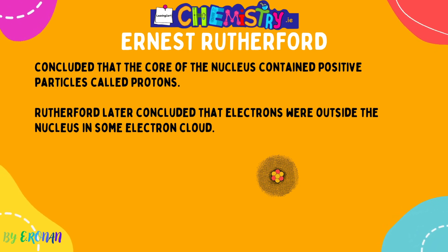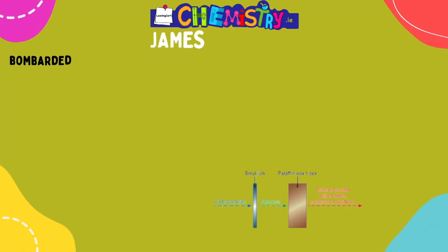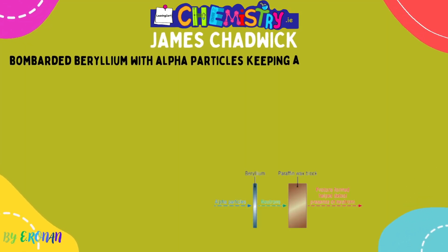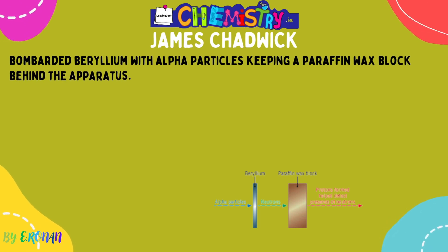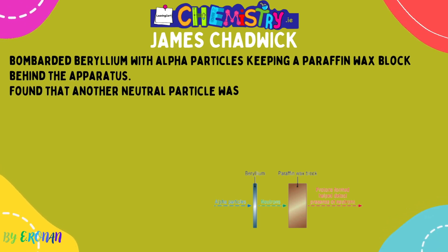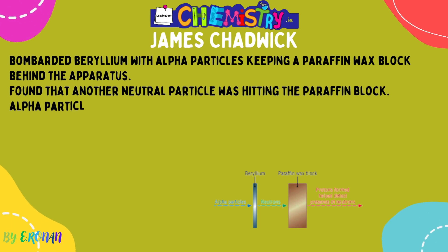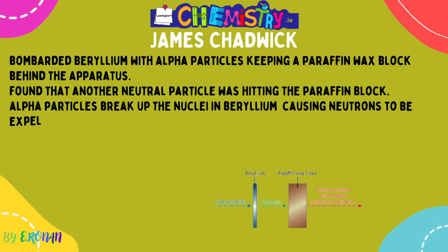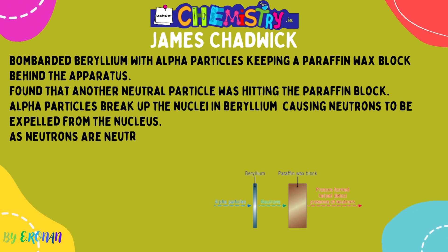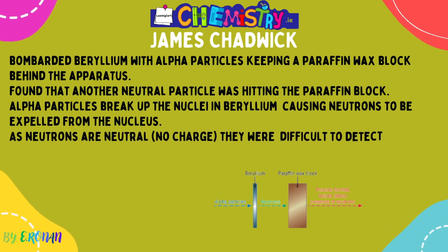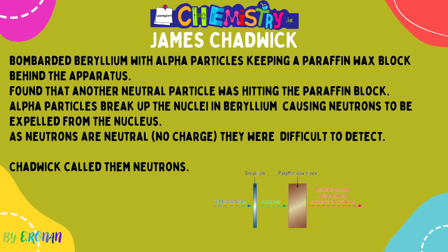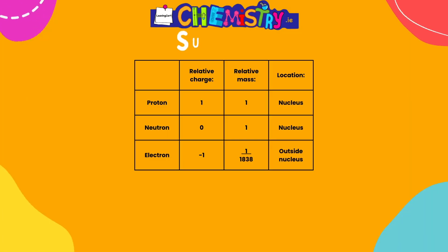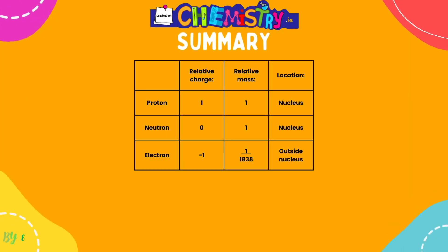James Chadwick continued from Rutherford. He replaced the gold foil with beryllium and bombarded it with alpha particles, keeping a paraffin wax block behind the apparatus. He noticed that another neutral particle was hitting the paraffin wax block — this didn't occur with gold foil because gold atoms are heavier than beryllium atoms. Neutrons were difficult to detect, and James Chadwick gave them their name.